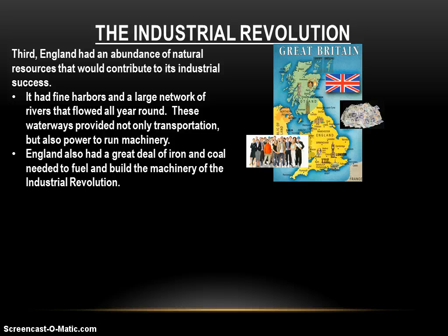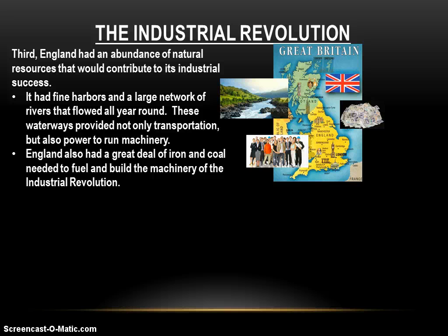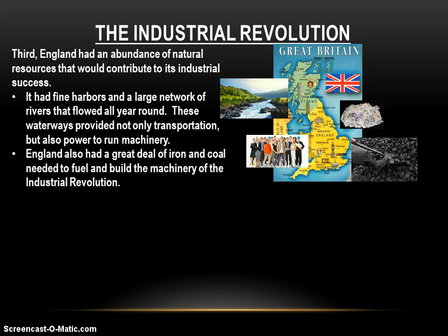England also has an abundance of natural resources that are going to contribute to its industrial success. Being an island, England has many fine harbors and a great network of rivers that flow year-round. These waterways provide transportation but are also a great source of power to run early industrial machinery. England also happens to have a great deal of coal and iron ore, which will eventually be needed to build and fuel the machinery of the Industrial Revolution. So England has the capital, the resources, and the labor supply — but there's actually one more piece of the puzzle that's missing.